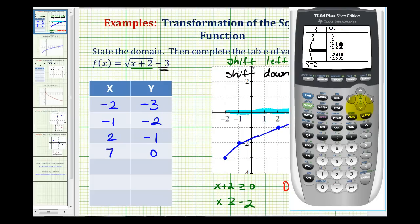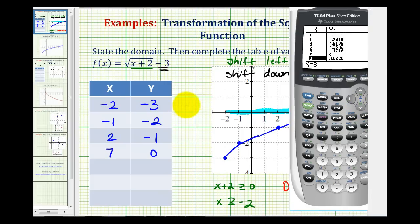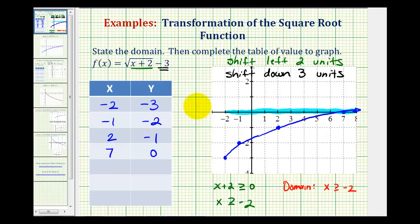As well as two, negative one, and seven, zero. So our graph looks good. I hope you found this helpful.